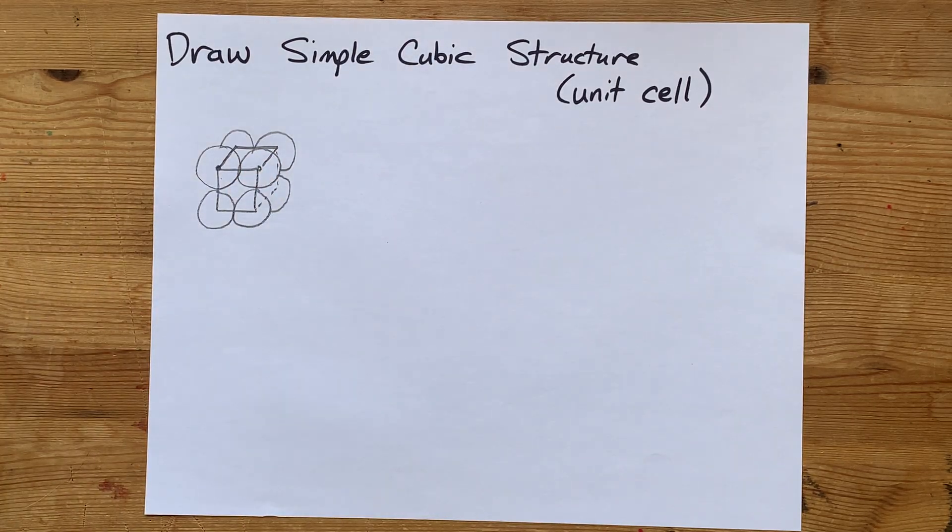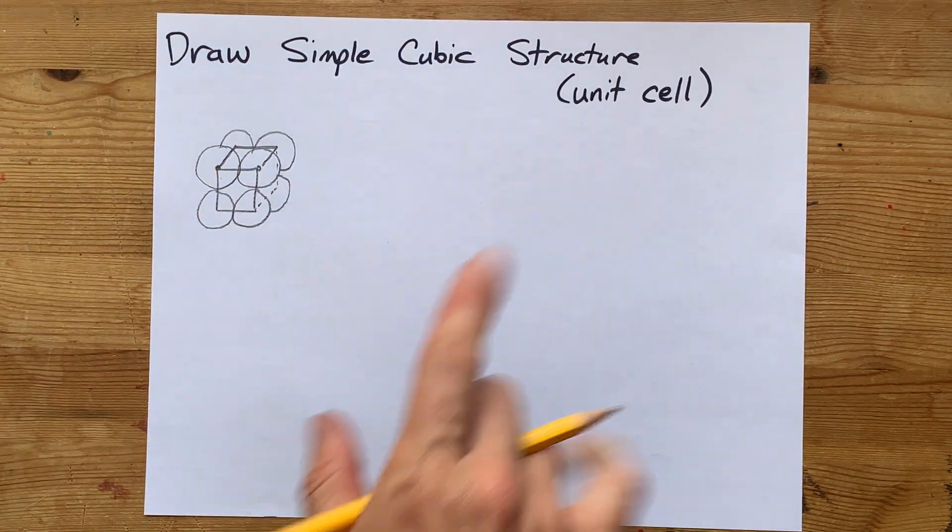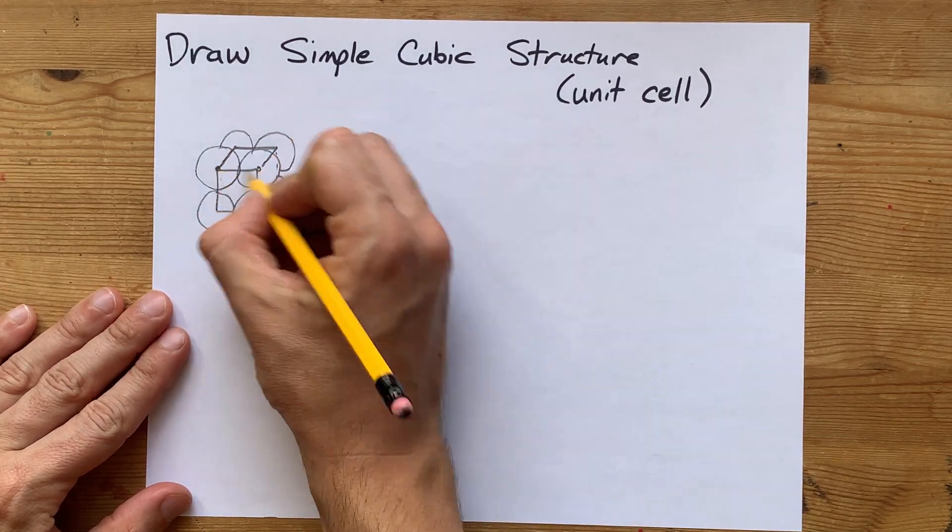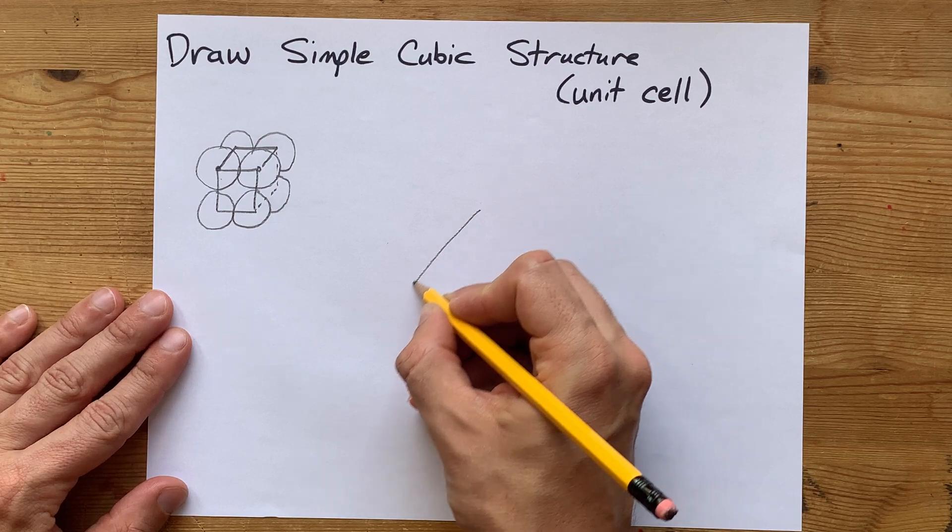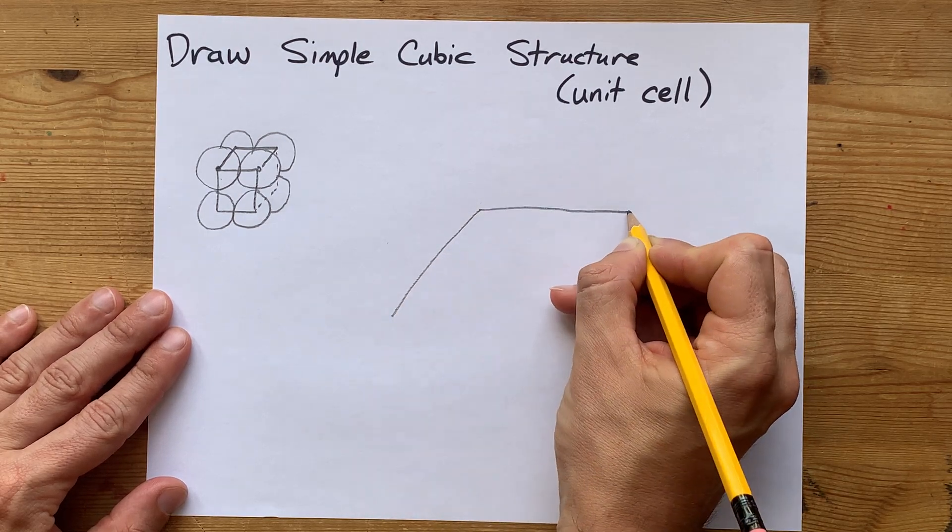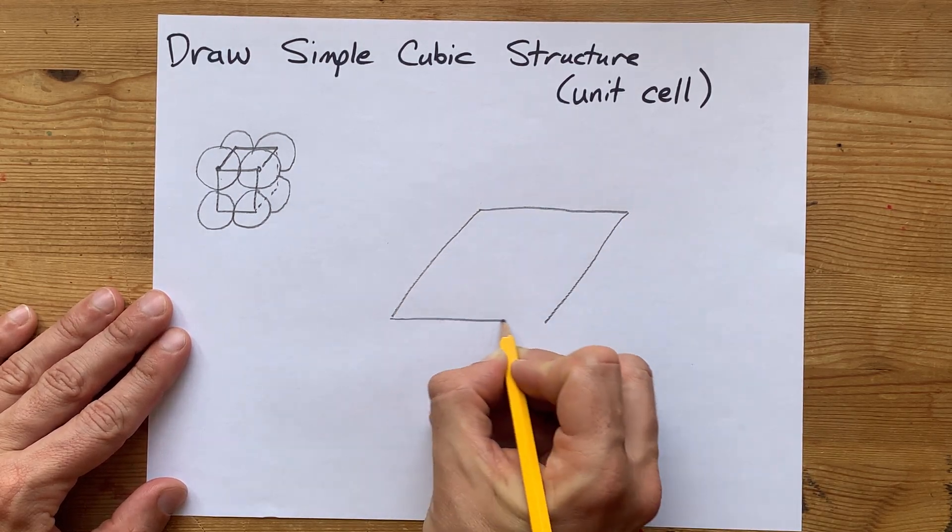What I like to do to draw this unit cell is start with my top square. It is a square, but it's in three dimensions, so I end up drawing it a bit like a rhombus or a parallelogram.